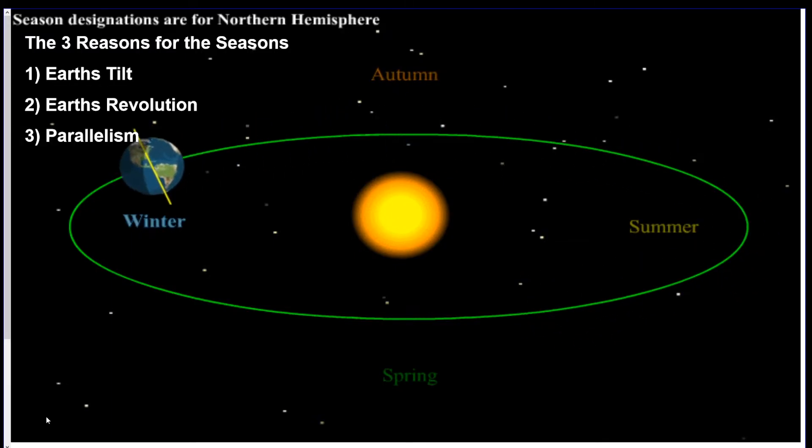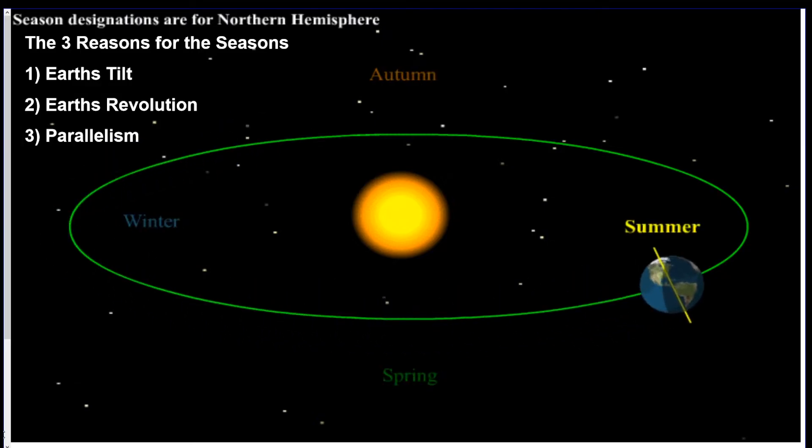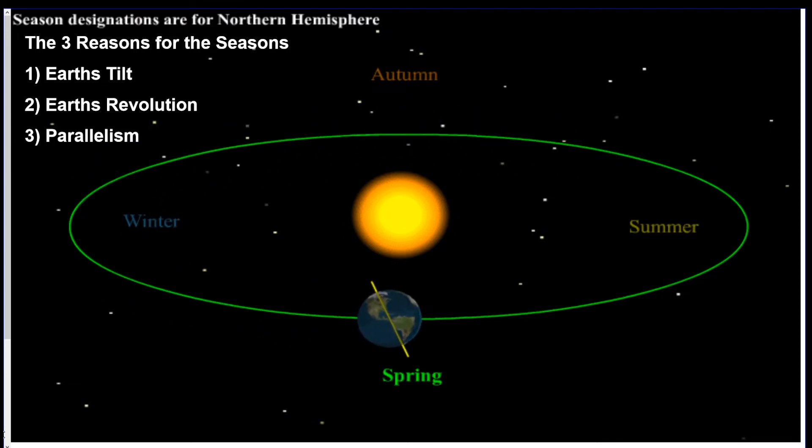As you could see in this little picture here, there's three main reasons for the seasons that I wrote on the top left. The first reason is the Earth's tilt which you could see with the yellow line on the picture and the second is the Earth revolving around the Sun which you can also see happening in the picture. And thirdly, if you notice that yellow line which is the tilt, that is always oriented in the same direction which is called parallelism. So the tilt is always facing towards the left side of your screen. Those are the three big ones. Now we're going to dive a little bit deeper into how they work.